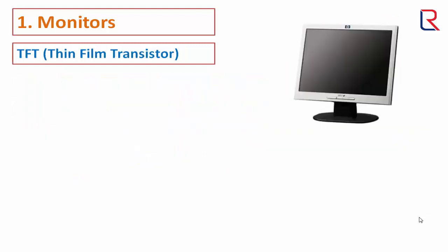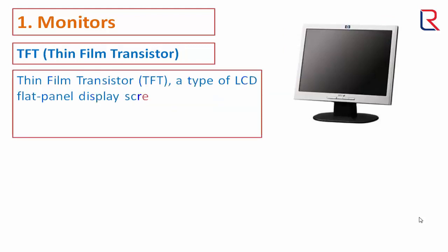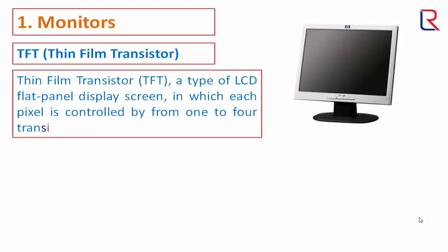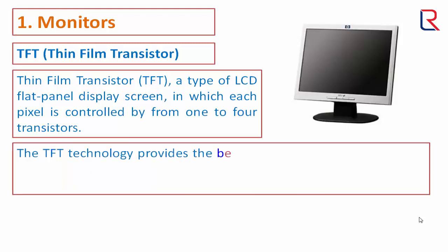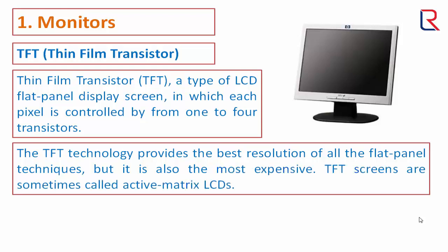TFT (Thin Film Transistor): A type of LCD flat panel display screen in which each pixel is controlled by one to four transistors. TFT technology provides the best resolution of all the flat panel techniques but it is also the most expensive. TFT screens are sometimes called active matrix LCDs.